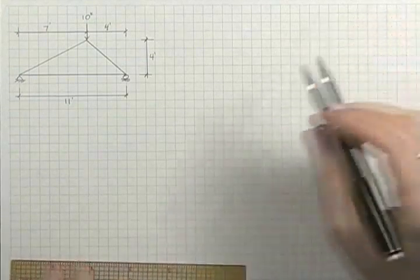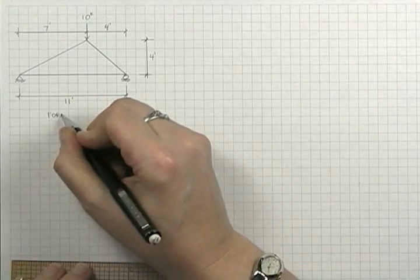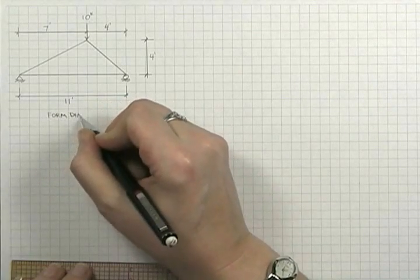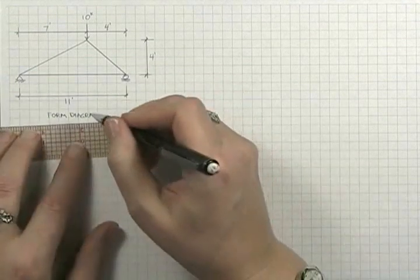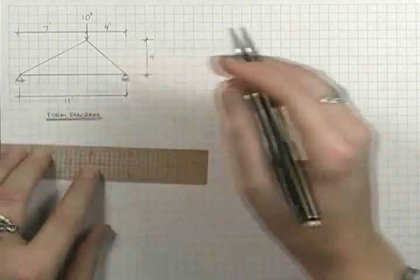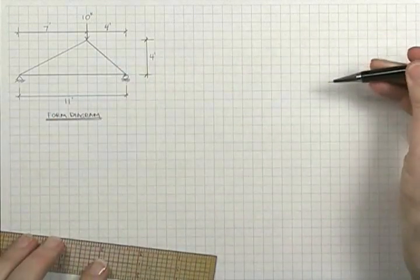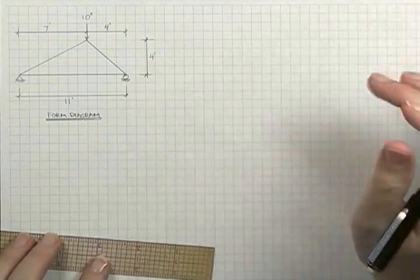The first thing we do is start with the form diagram, so this is our form diagram. It does not need to be drawn to any particular scale, however the proportions do need to be correct. That's because we're going to use this as the basis for our force polygon.